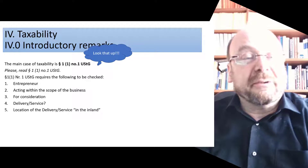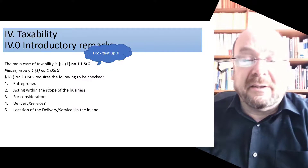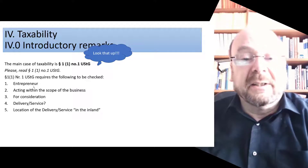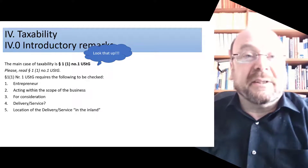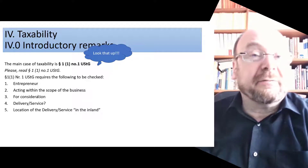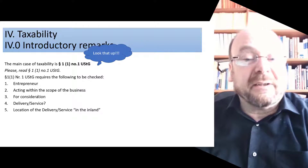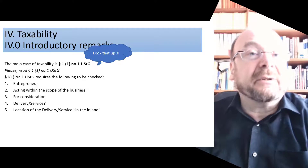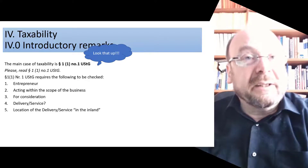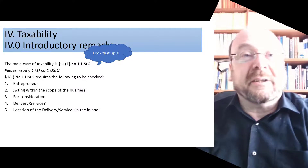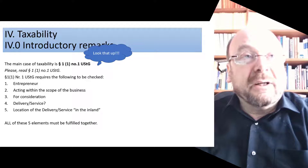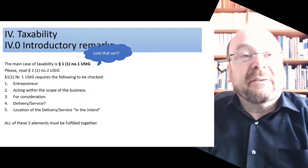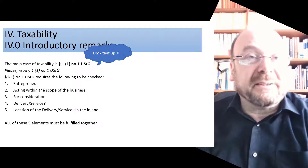I propose you underline these five core criteria in the text. My recommendation: underline 'entrepreneur' and 'acting within the scope of the enterprise' in the same color. Take a different color for 'for consideration', and a third color for 'delivery' and 'in the inland', so that you see 'in the inland' refers not to where the entrepreneur is, but to where the delivery or service was made.